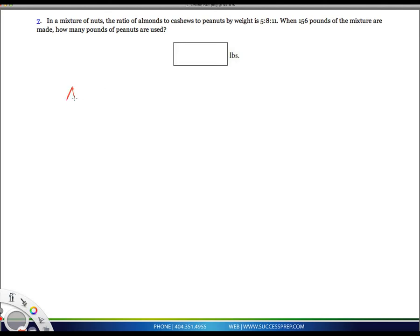We have the almonds, we have the cashews, we have the peanuts. The almonds are 5, cashews 8.